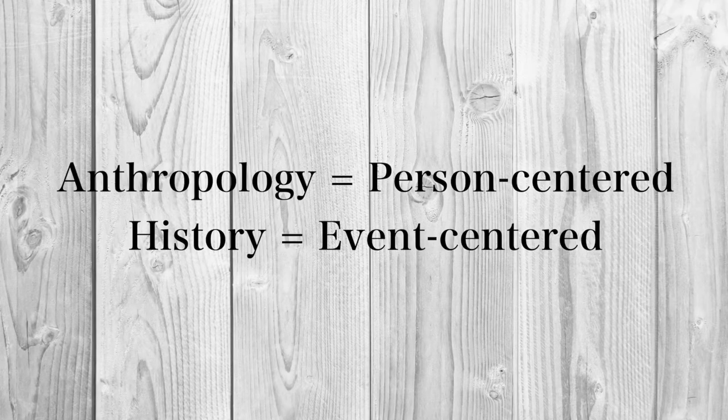That example leads me into my next point, which is that anthropology is very person-centered, whereas history I would argue is very event-centered. I've alluded to this throughout the entire video, but I truly think this is probably the most clear way to divide them. When you study history, you're going to be looking at a lot of different time periods and a lot of different things happening all at the same time. When you study anthropology, you're taking a very different approach — you are looking at people or certain people who represent a particular community and their experiences.